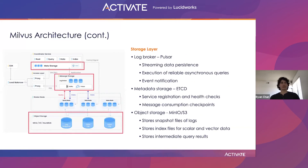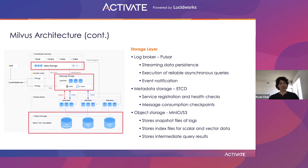Finally, we have the storage layer of Milvus. Milvus uses a number of open source technologies to handle data movement and storage. Our log broker makes use of Pulsar, which allows the system streaming data persistence, event notification, and reliable asynchronous queries. Metadata storage and service discovery is handled by etcd, a resilient distributed key-value store. Object storage is handled with MinIO or S3, where we store snapshot files of logs, index files, and intermediate query results. When deploying through Helm, these components will automatically be set up. However, if you already have an existing Pulsar cluster you'd like to use, Milvus is capable of routing through that.